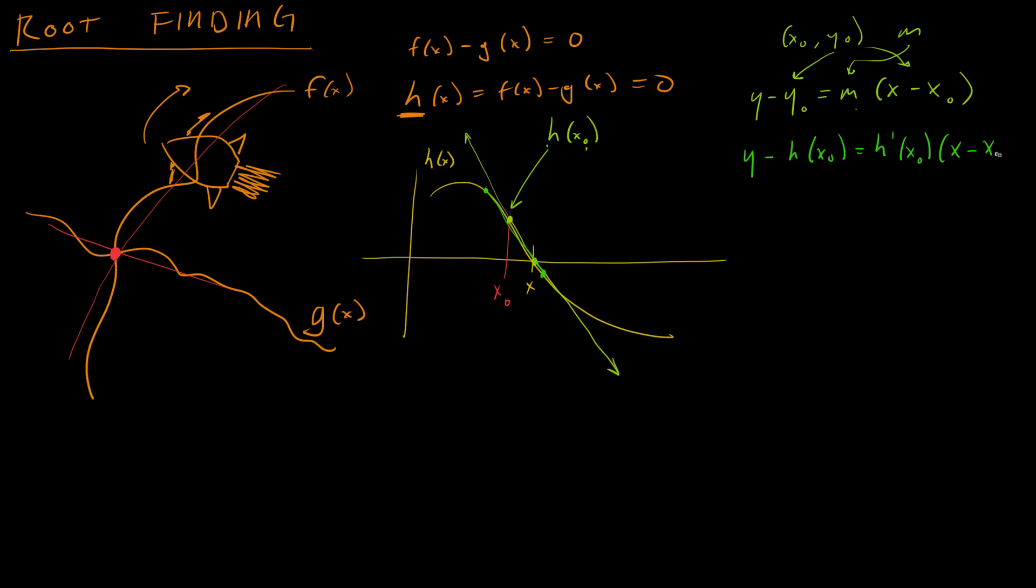So that is the formula for this green line. Now, we know that the intercept of the green line happens when y equals zero.